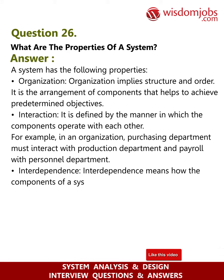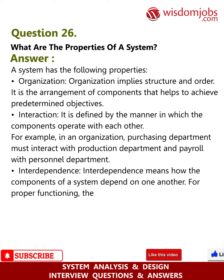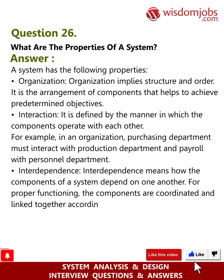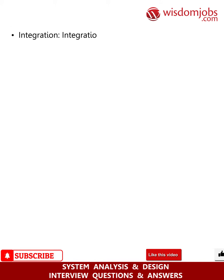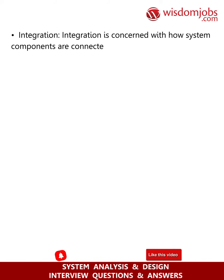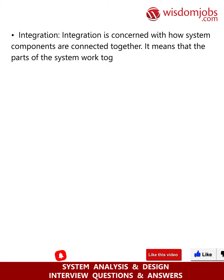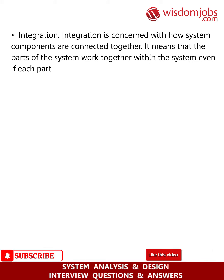Interdependence: it means how the components of a system depend on one another for proper functioning. The components are coordinated and linked together according to a specified plan. The output of one subsystem is required by another subsystem as input. Integration: it is concerned with how system components are connected together. The parts of the system work together within the system even if each part performs a unique function.